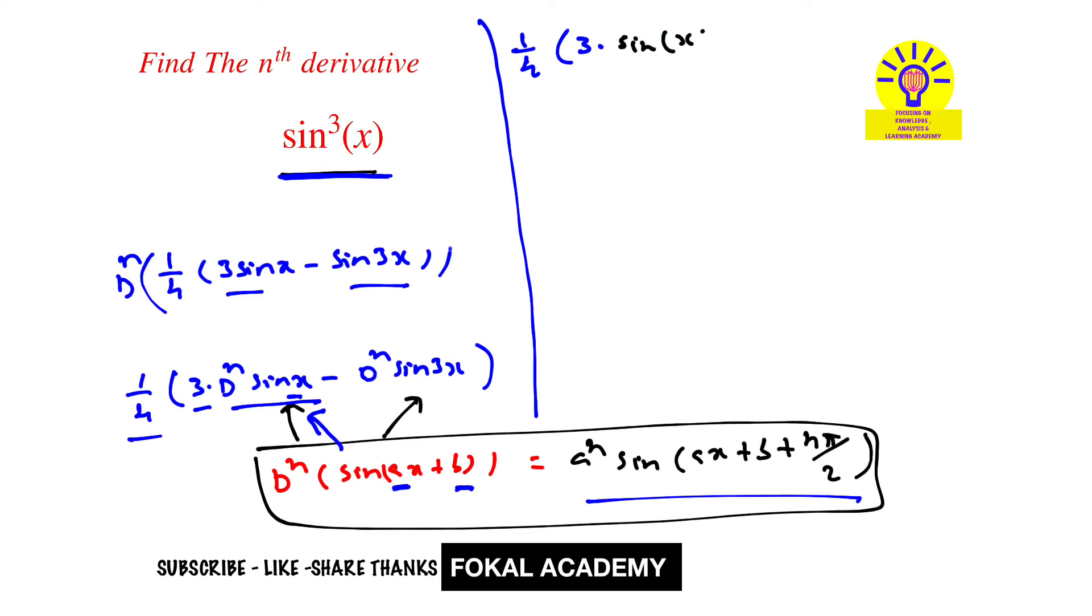Now for this term, a equals 3 and b equals 0. By applying this we'll get 3 power n into sin of 3x plus n pi by 2. And this is the required solution for the given problem.